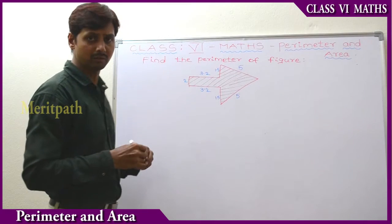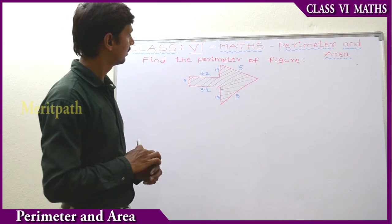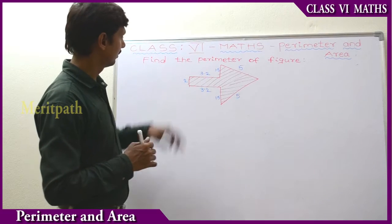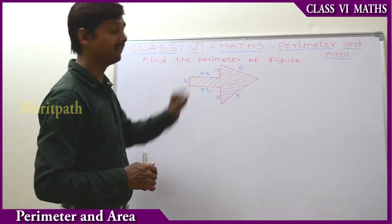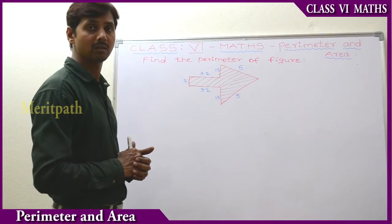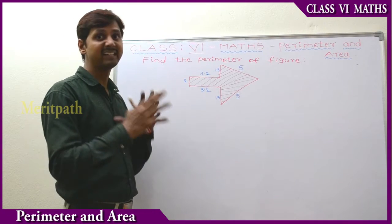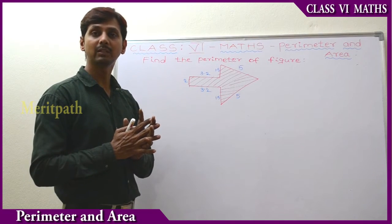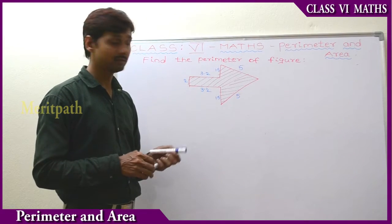So here we can observe that the sides represent 1, 2, 3, 4, 5, 6, 7 sides. We know that sum of all the sides of the figure is called the perimeter, so let's add all the sides.